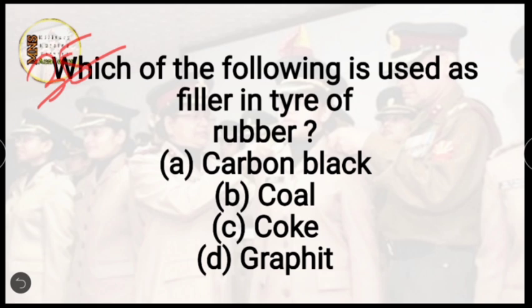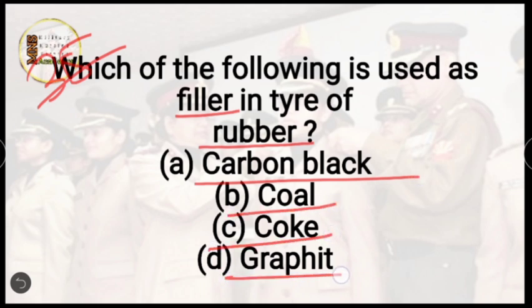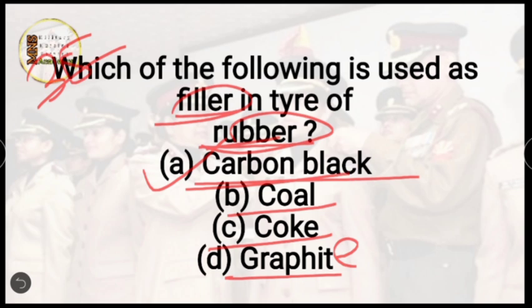Question number 35: which of the following is used as a filler in rubber tires? Options are carbon black, coal, coke, or graphite. The correct answer is option A, carbon black. Carbon black and amorphous silica are used as fillers in rubber tires. They are added to reduce heat resistance so the tire does not burst into flames, and to extend the tire's life.